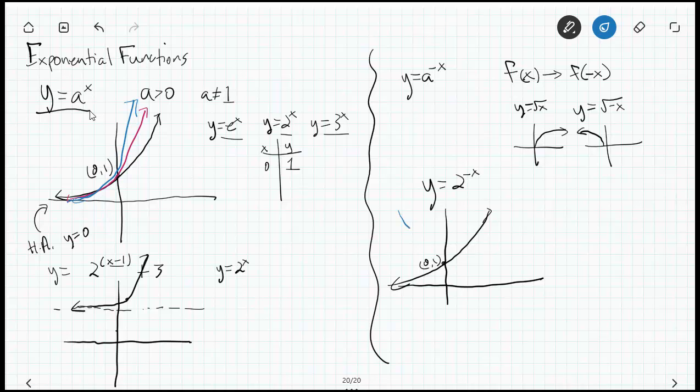I reflect it across the x-axis. But remember, I want you to look at this from not just a graphical point of view—I want you to look at it from a numerical point of view as well. Why does that work? See, if you notice, I still have this horizontal asymptote, H.A. at y equals 0. Why is that?